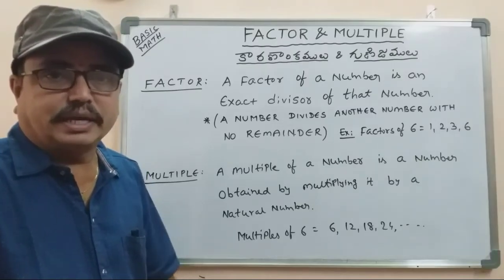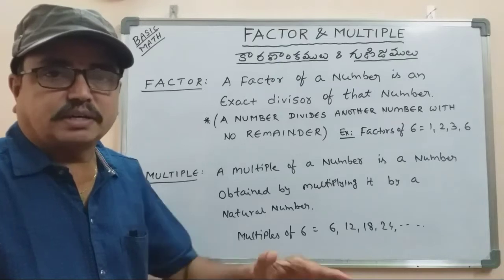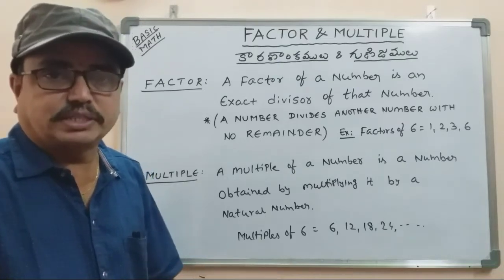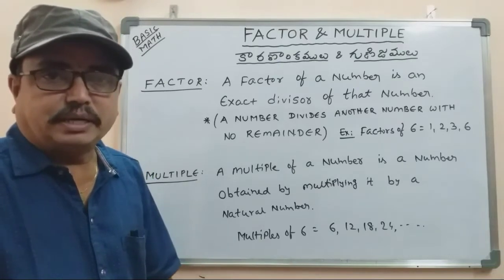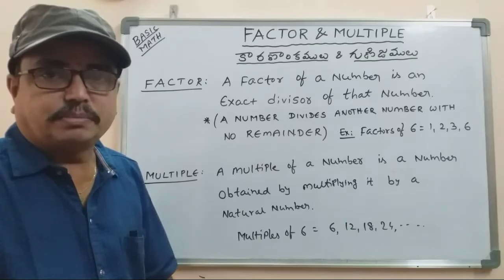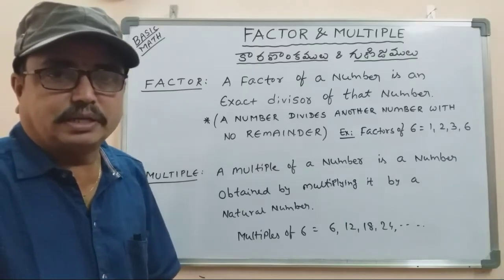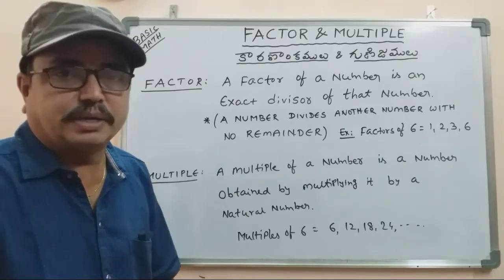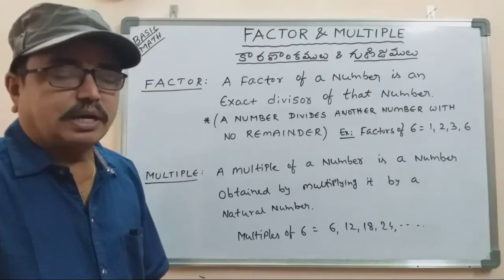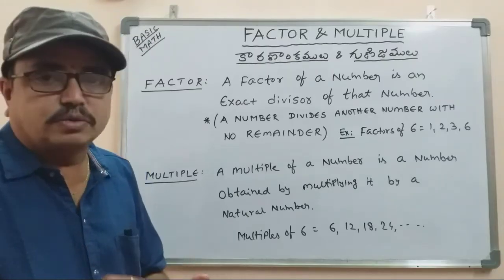Set A is equal to factors of 6, and set B is multiples of 10. We need to find A union B, A intersection B, and A minus B. That is the concept of factors and multiples.